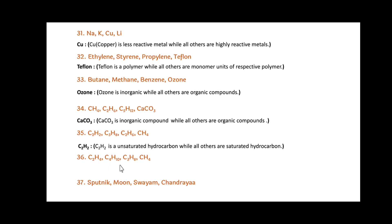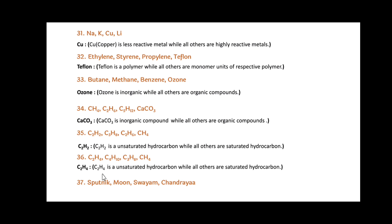Next: C2H4, C4H12, C3H8 and CH4. Friends, here C2H4 is the odd one out. Since C2H4 is an unsaturated hydrocarbon, while all others — C4H12, C3H8 and CH4 — are saturated hydrocarbons.